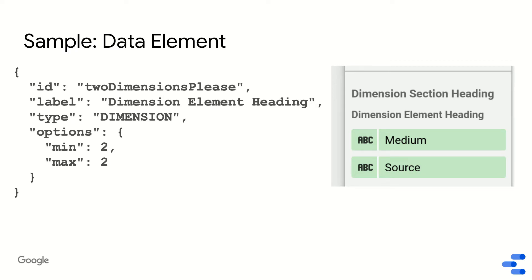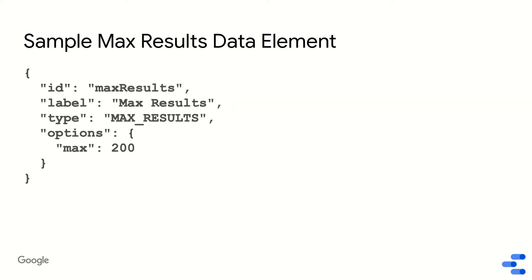There are three types of data elements. You have dimension and metric elements, which render in the property panel as places where you can load a dimension or metric into your visualization. There's also a third type: a max results type. This defines the max number of rows that Data Studio will return to your visualization. If you don't define this, Data Studio will return 2,500 rows max to your community visualization.